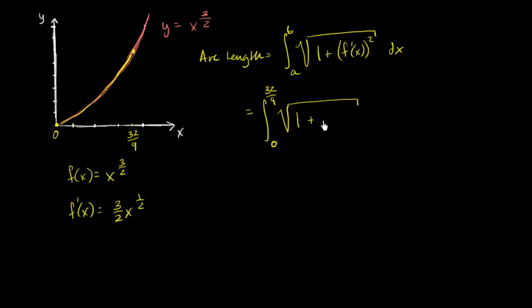It's fairly straightforward to find the antiderivative. So we've done a lot of engineering of this problem to make the numbers work out well, but let's just go through it. So this is f prime of x. f prime of x squared is going to be this quantity squared. It's going to be nine over four, x to the one half squared is x. So one plus nine fourths x dx.